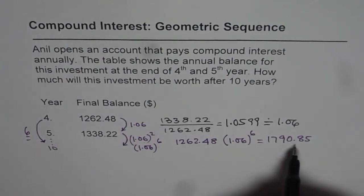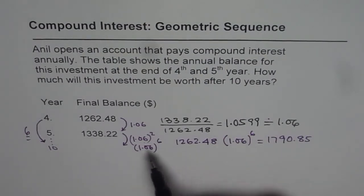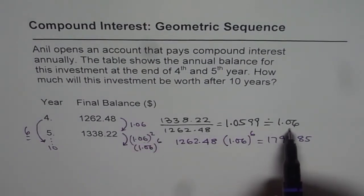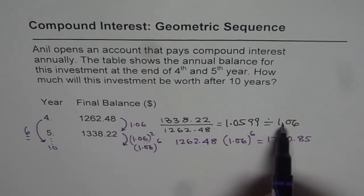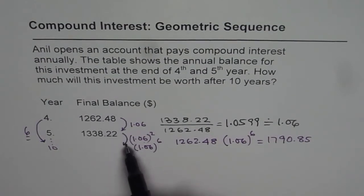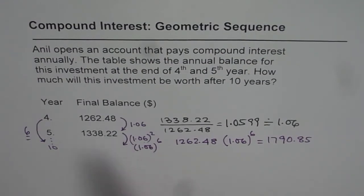So that is the amount after 10 years, which we find by first determining the growth factor. Every year the amount grows by a factor of 1.06, so we multiply each year's amount by 1.06 to get the next year's amount. That is how we apply the geometric sequence concept to get the solution to this kind of question. Thank you.